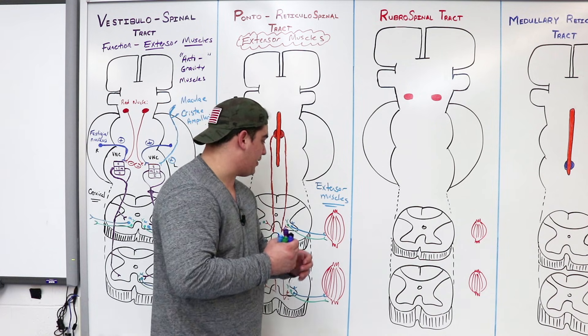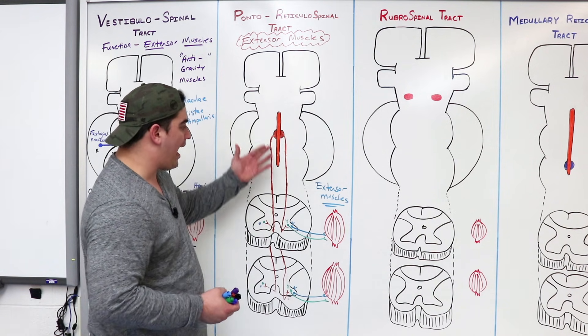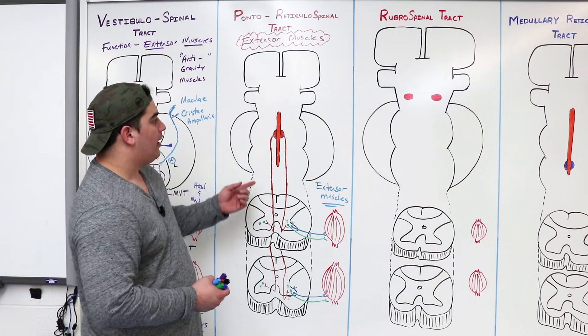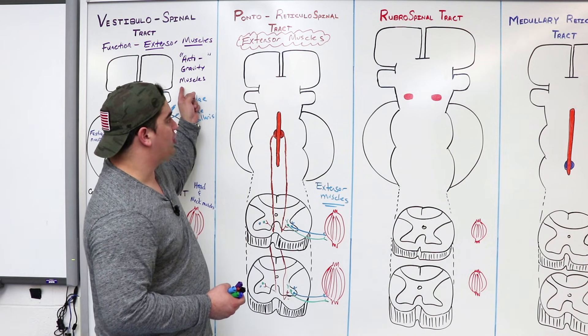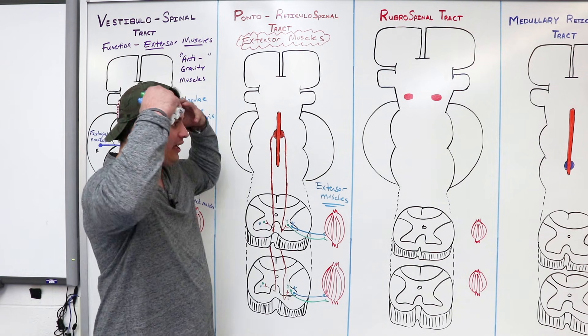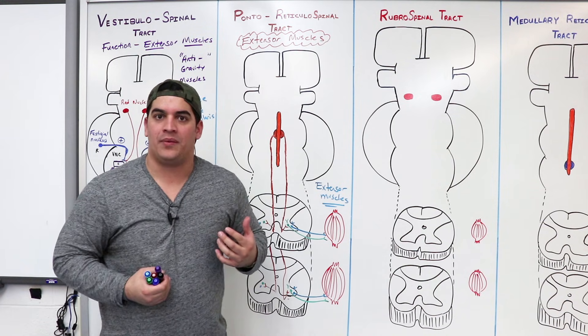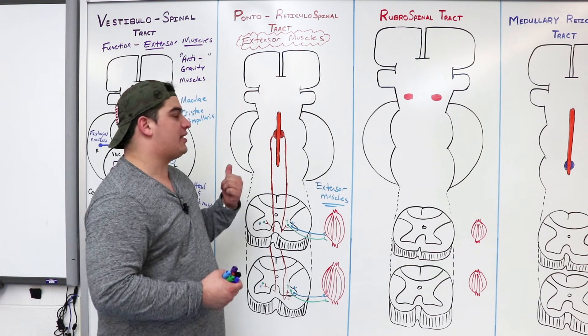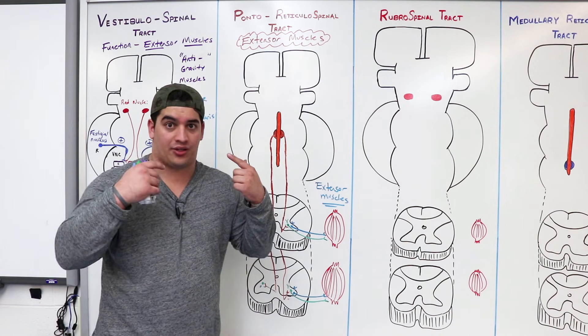Alright, so last thing here, I want you guys to remember something. So we know the pathway, we know what it's serving. Now, in the vestibulospinal tract, we said that there was a specific stimulation for it, whether it was coming from the fastigial nucleus in the cerebellum, or whether it was coming from the inner ear structures.